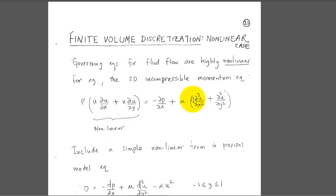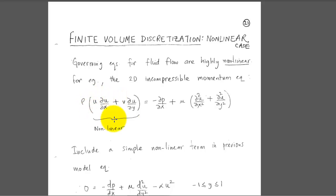Let's consider finite volume discretization for a nonlinear equation. The governing equations for fluid flow are highly nonlinear. For example, consider the 2D incompressible momentum equation — the x component. This represents momentum balance in the x direction for an infinitesimal fluid particle, where the term in brackets represents the acceleration. This term is a product of u, which is unknown, and ∂u/∂x, which is also unknown — so it's a product of two unknowns, making it a nonlinear term.